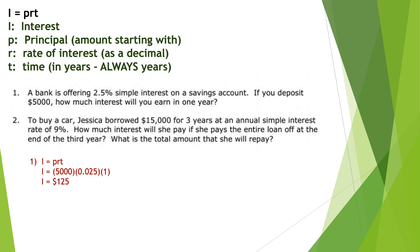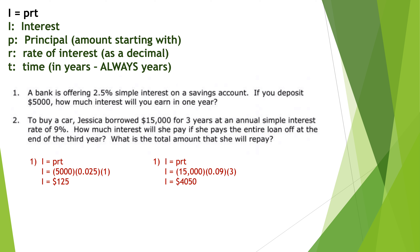Number two: a buyer borrowed $15,000 for a car for 3 years at an annual simple interest rate of 9%. How much interest will she pay if she pays the entire loan off at the end of the third year, and what's the total amount she will repay? I equals PRT: 15,000 times 0.09 times 3 equals $4,050. That's the interest. The total amount she repays is $15,000 plus $4,050, which is $19,050.